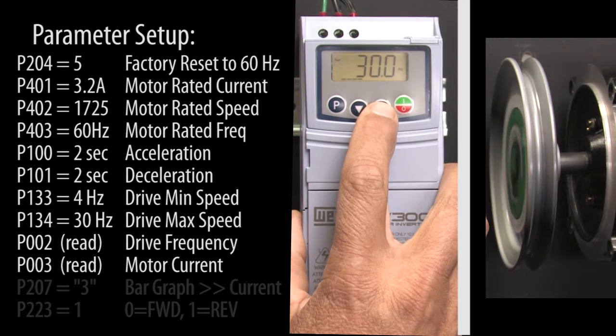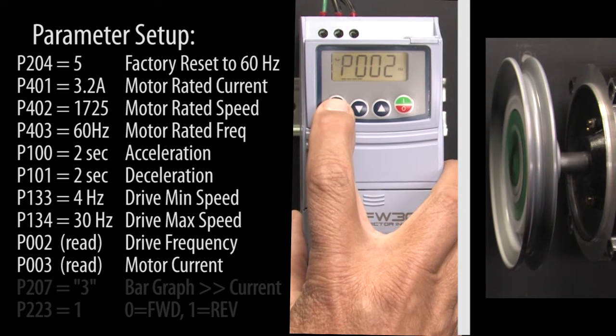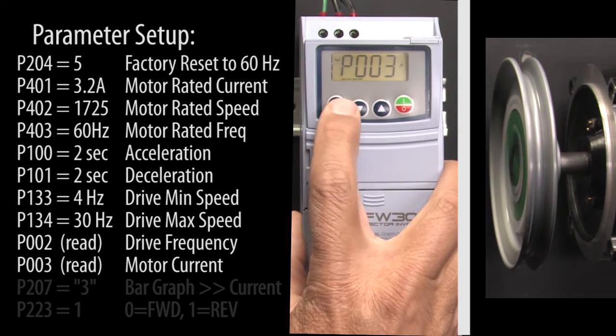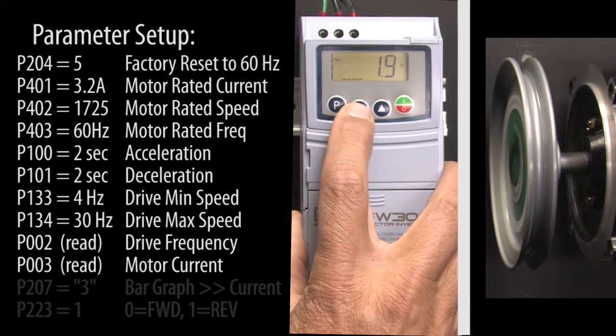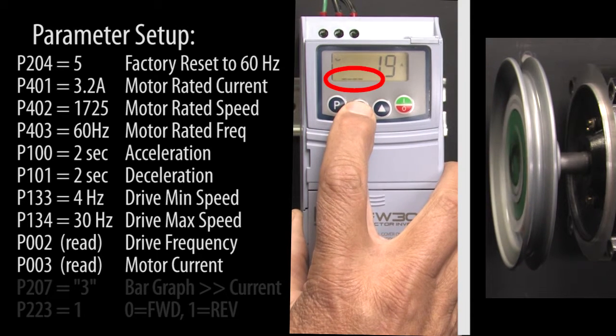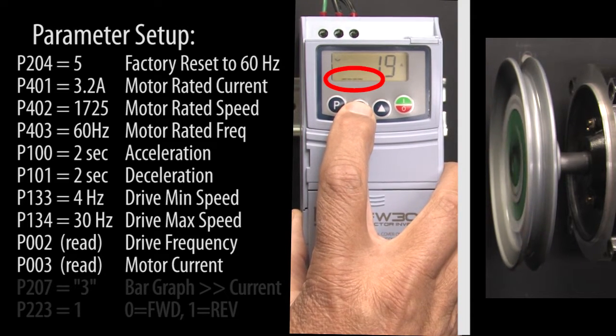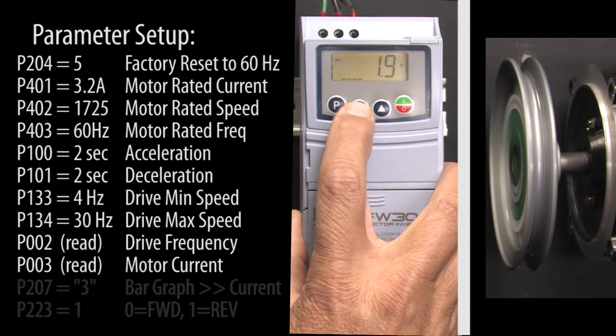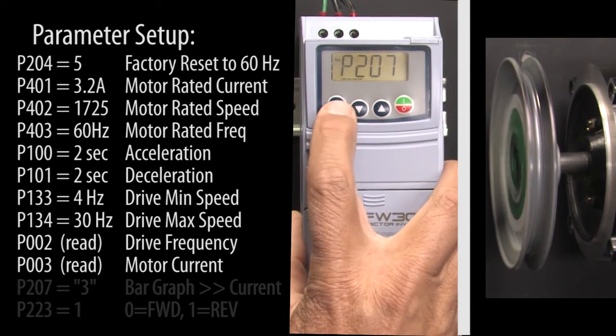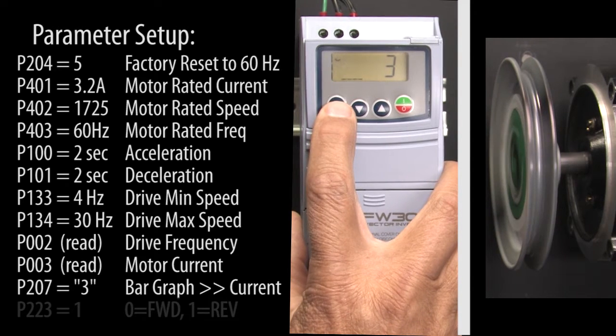To view the motor's current, press P to exit the frequency parameter. Go to parameter 3 which is the motor's current and press P to see the value. This bar graph down here is also showing the motor current because the bar graph parameter, which is parameter 207, says display parameter 3, the motor's current.